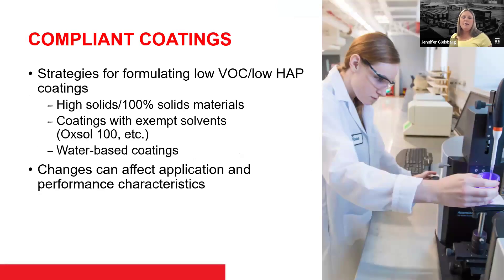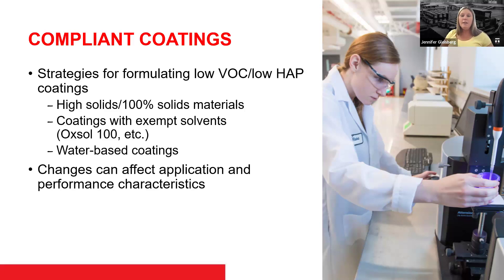When talking about compliant coatings — really looking at the South Coast Air Quality Management District — the strategies for formulating low VOC and low HAP coatings come down to three approaches: higher solids or 100% solids materials; coatings with exempt solvents, such as Oxol 100, which are exempt in certain areas; or water-based coatings where water acts as the solvent. Depending on the formulation changes, this can affect the application and performance characteristics, so not all coatings act the same way when reformulating.